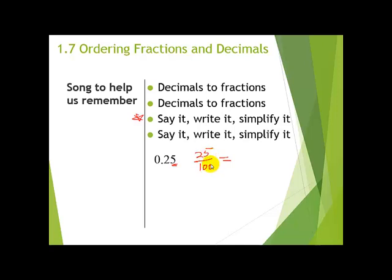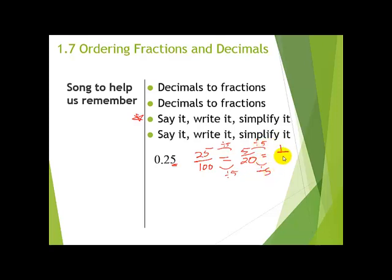To simplify 25/100: both end in 5 and 0, so by divisibility rules I can divide by 5. 25 ÷ 5 = 5, and 100 ÷ 5 = 20, giving 5/20. I can keep going: 5 ÷ 5 = 1 and 20 ÷ 5 = 4, giving 1/4. That makes sense — 0.25 is a quarter, a fourth of a dollar. So we say it, write it, and simplify it.